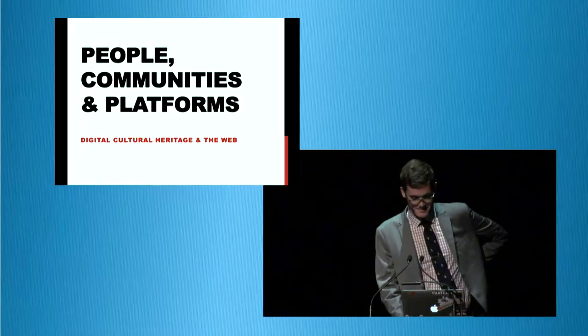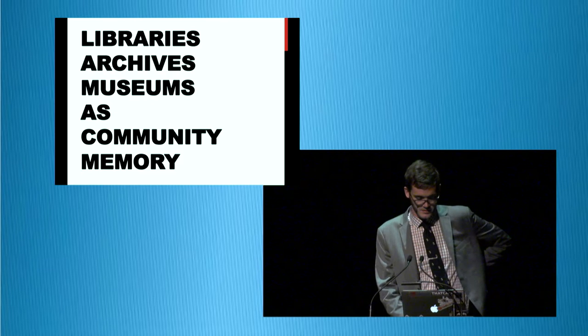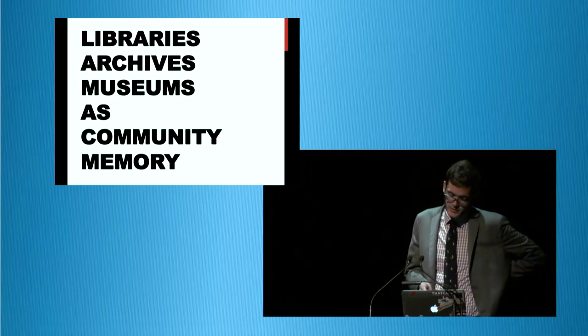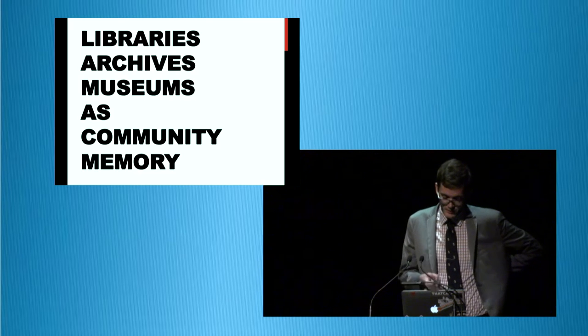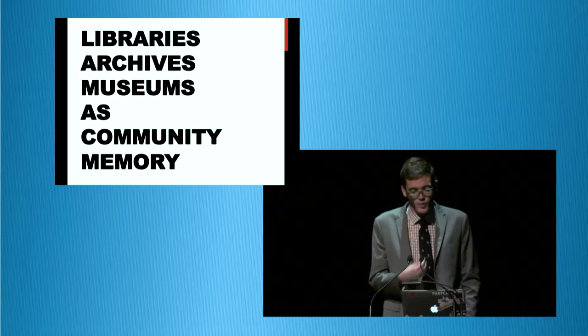The talk is about the history of community and social interaction on the web and the role that libraries, archives and museums can and should play in this area in the future. To start with, libraries, archives, and museums are sites of community memory. They're repositories of knowledge — places where wisdom is organized, synthesized, and made available. Community memory is such a great phrase for the social function that libraries, archives, and museums play.